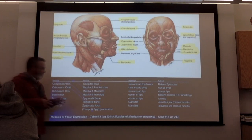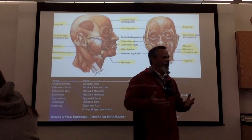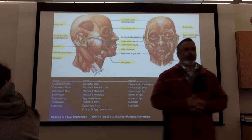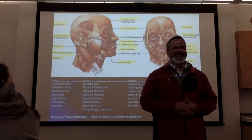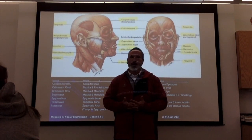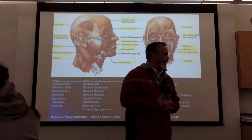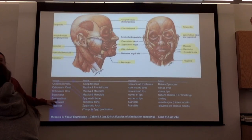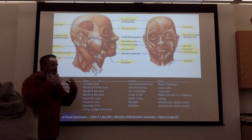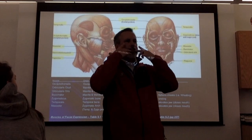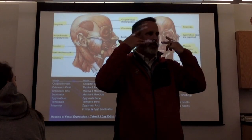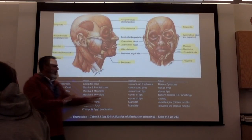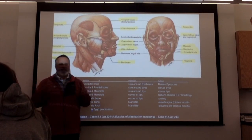Zygomaticus — we went over this one yesterday. It's named after the bone it originates from — the zygomatic bone. It inserts at the corner of the lips. The muscle always pulls on the insertion, pulling it back toward the origin. So if you learn origin and insertion first, the action just makes logical sense.